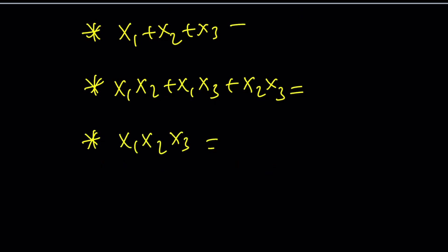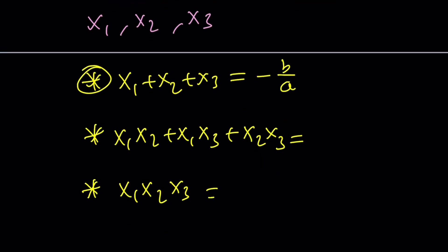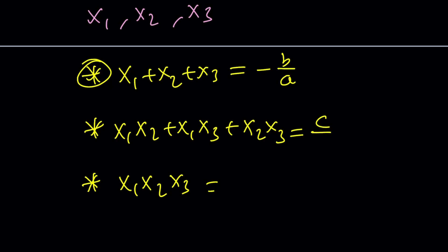And each of these depend on the coefficients. The sum of the roots, and this is nice because this never changes for any degree polynomial. It's always negative B over A. The two-way products added together is going to be C over A, and this is going to be negative D over A. Notice how the coefficients and the signs alternate.